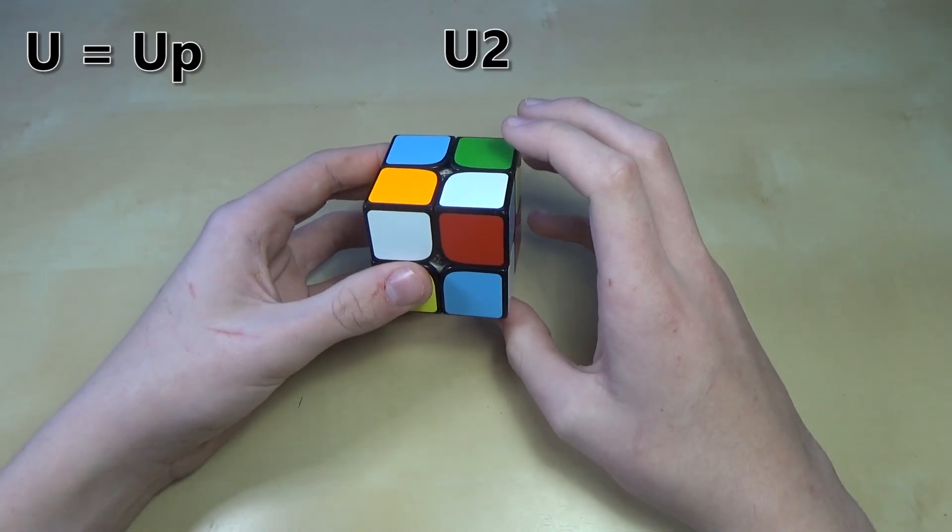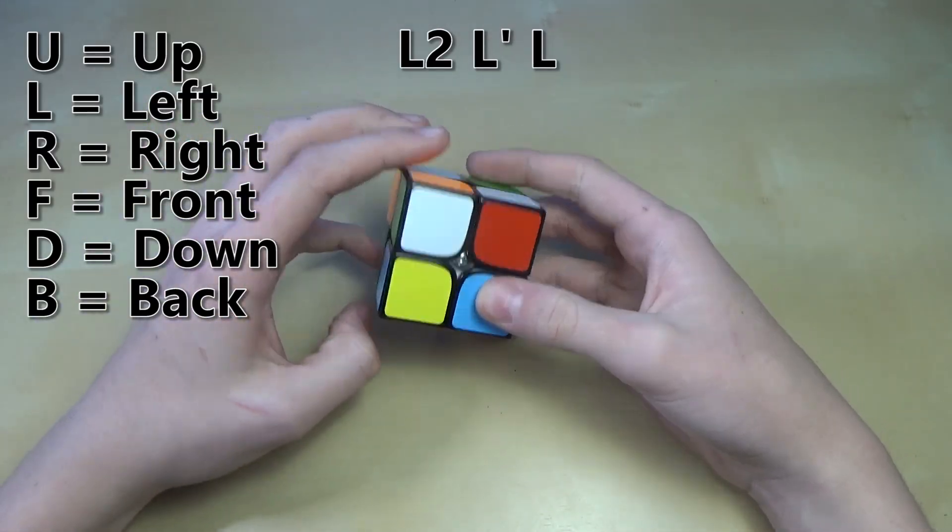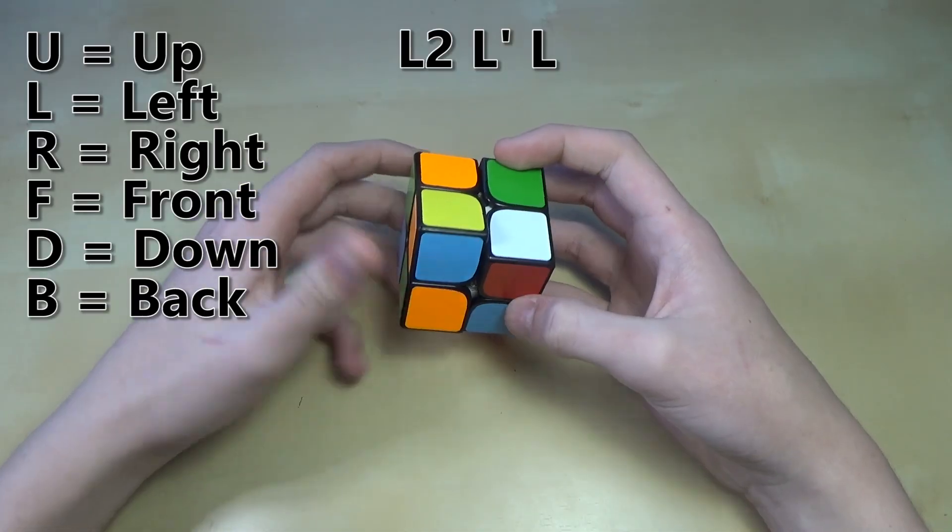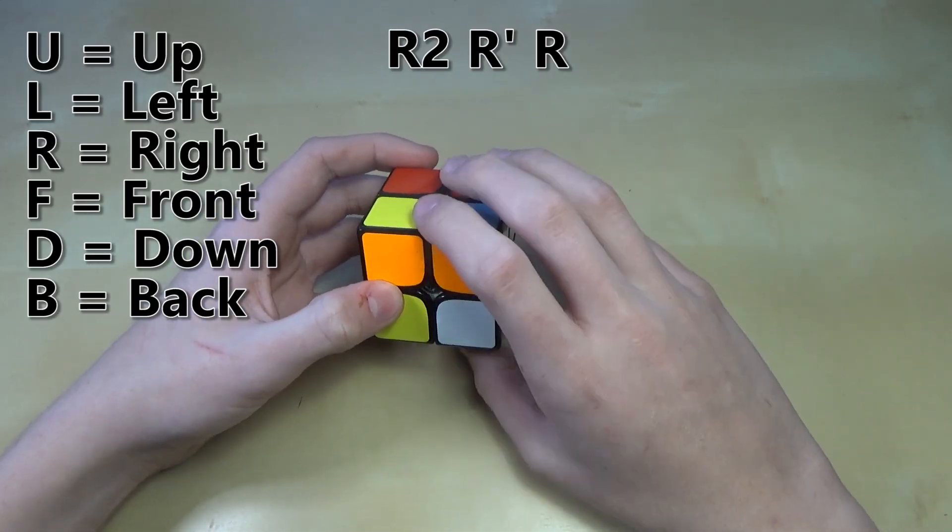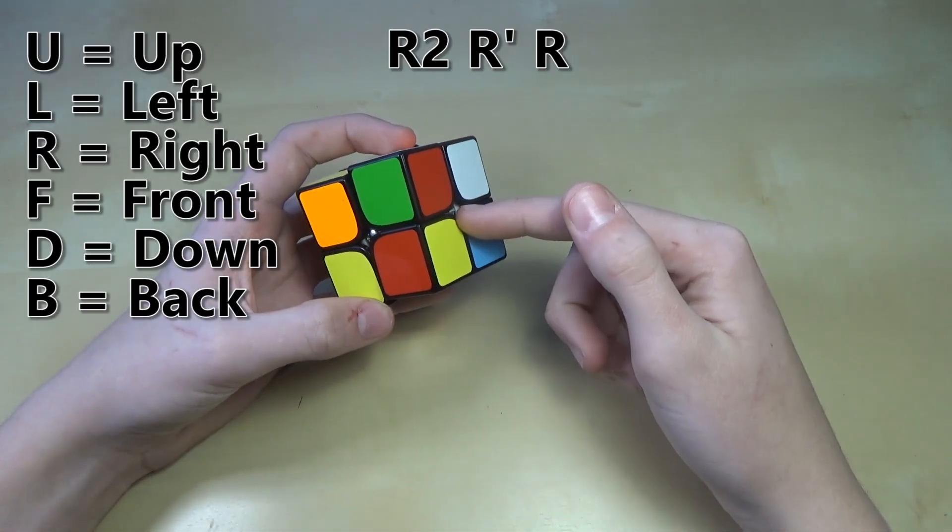And so like doing L2, which is the left side, would be like this. This is L prime, this is L. R2, R prime, R, which is right.